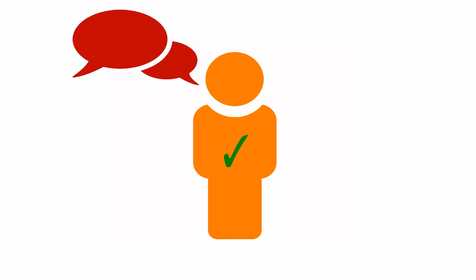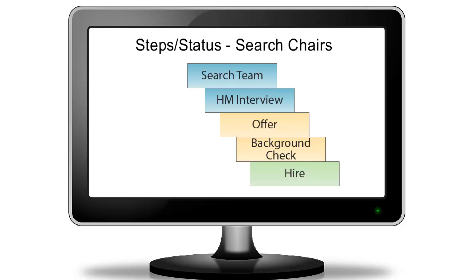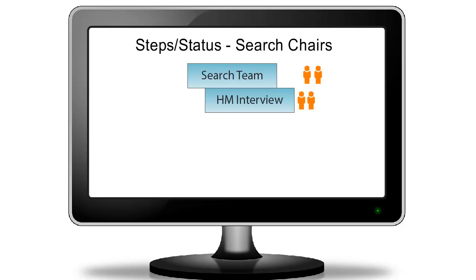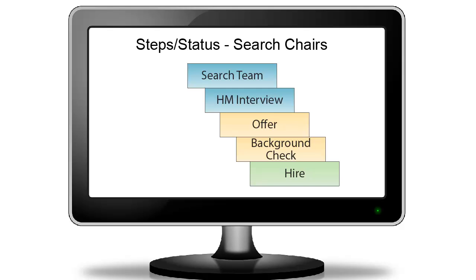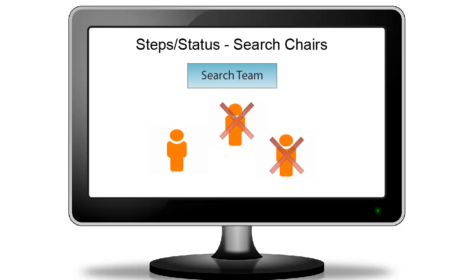If you'd like to set up an interview, you'll need to notify the candidate and also change their status in the TMS system. There are several steps a candidate must move through in the TMS system to be hired. As a search chair, you will be updating the candidate's steps and status, which documents the evaluation process to maintain compliance and best practices. Search chairs will mainly be focusing on the search team step for most of their candidate evaluations. The first step — the search team step — allows the search team to review and select candidates for initial interviews and reject those who do not meet the required qualifications.